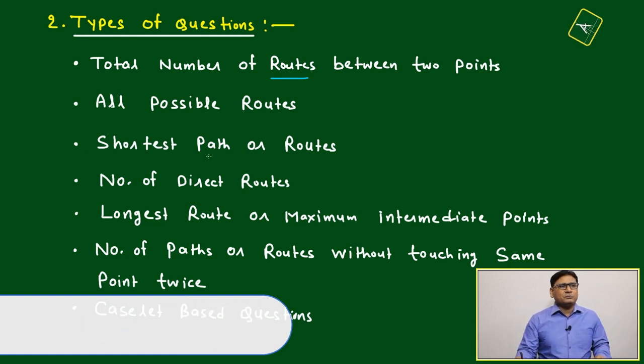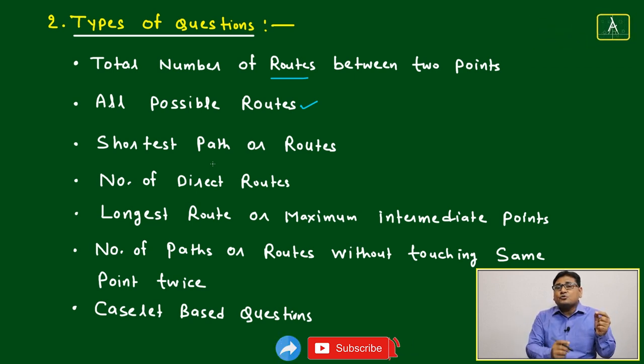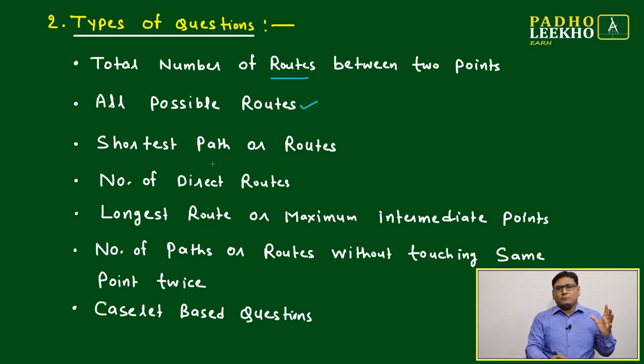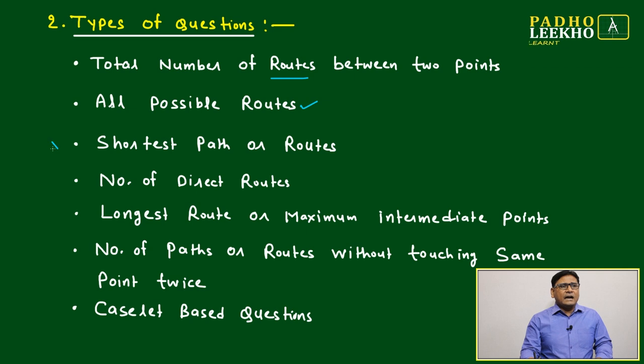Next is all possible routes. Maybe condition will be given: if you are following some routes, same place or same city should not repeat, because if repetition will be allowed, then maybe you will keep on repeat the route and it will not differentiate with other route. Then all possible routes, including the condition, excluding the condition. Next and most important category is shortest path routes. This is very famous type of question generally asked under routes and network type of questions.